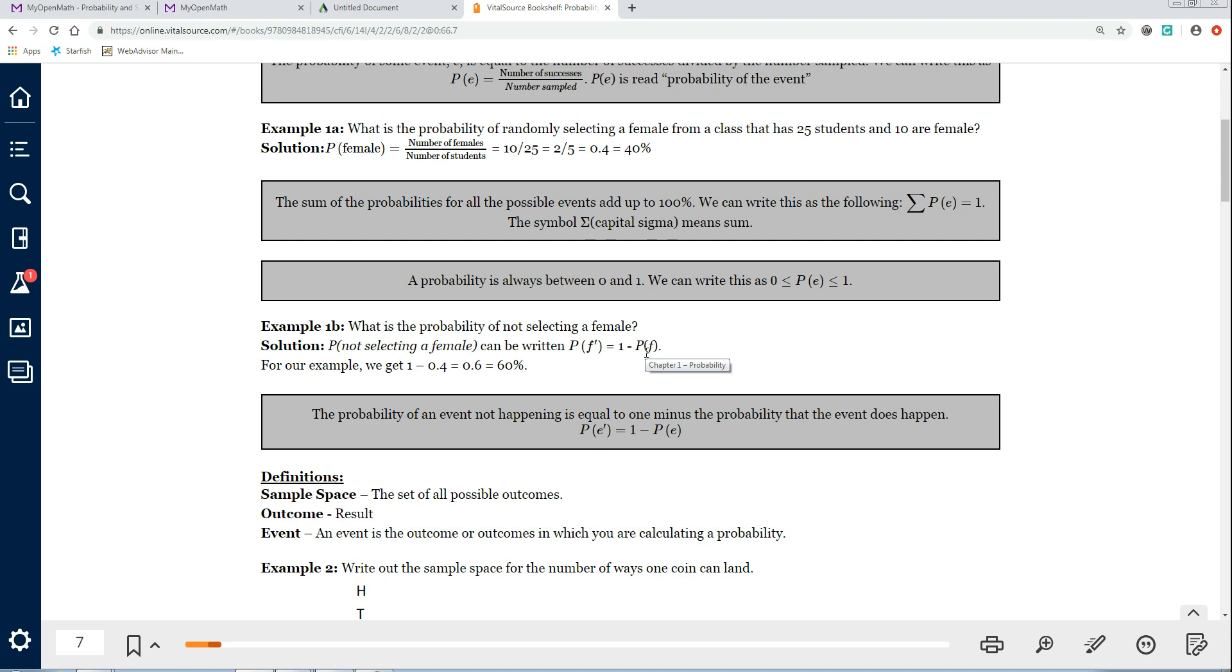So in the last problem, we got that the probability of female was 0.4. So to get the probability that a person is not female is 1 minus 0.4 or 60%, 0.6. So the probability of something not happening, the probability of an event not happening, is always equal to 1 minus the probability that the event does happen. And that's a really handy thing to know for a lot of problems. Sometimes the probability of calculating the probability that something won't happen is much easier than calculating the probability it will happen.